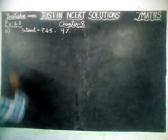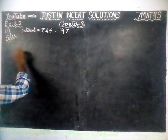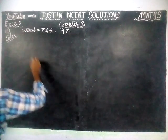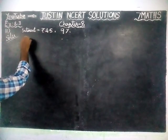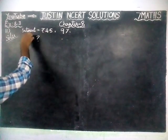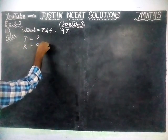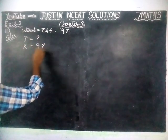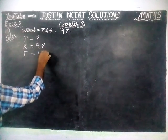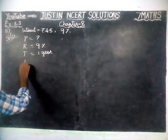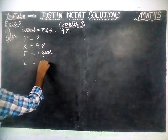We are going to use the simple interest formula. Before that, we will write what are the things they have given. Principal amount: we don't know. Rate of interest: 9%. Time is equal to 1 year. And interest amount is equal to Rs.45.